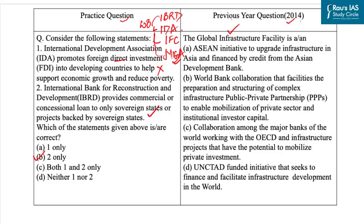IDA helps the world's poorest countries by providing interest-free loans and grants for programs that boost economic growth. IFC, the International Finance Corporation, is the largest global development institution focused on the private sector in developing countries. The correct answer of this PYQ is option B. That's all for today — stay tuned for more such updates.